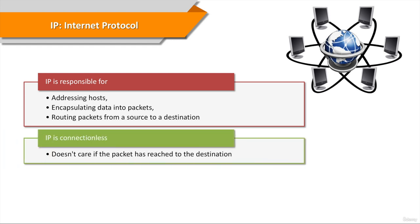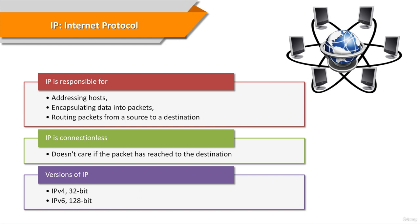Like other layer 3 protocols, IP is connectionless, which means it doesn't care whether the packet has reached the destination or not. That's what layer 4 is for. There are two versions of IP that currently coexist within the global Internet: IP version 4, or IPv4, and IP version 6, or IPv6.